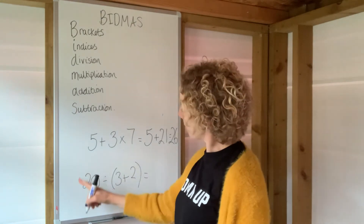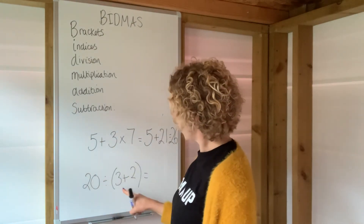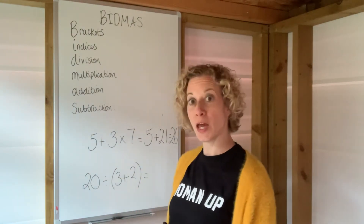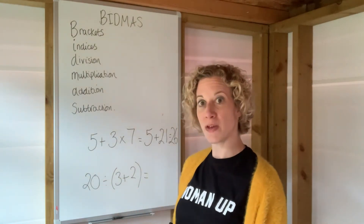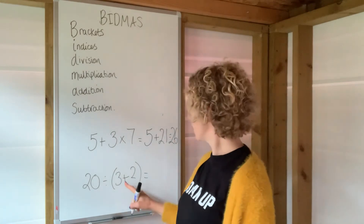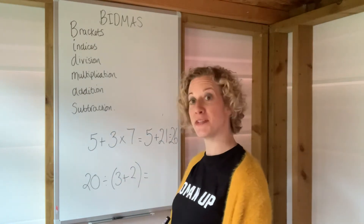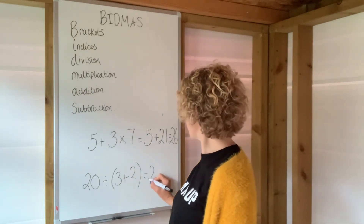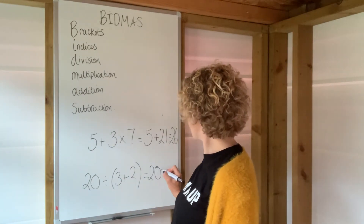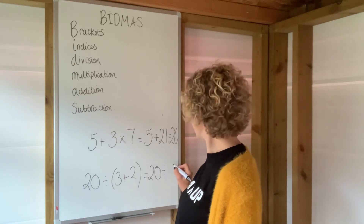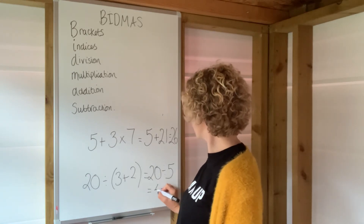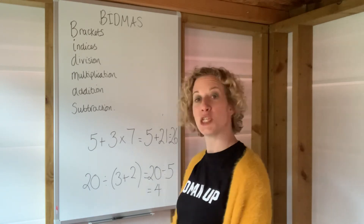And in this sum here, we do the brackets first — we work out what's in the brackets first of all. So 3 plus 2 gives us 5, and the sum then becomes 20 divided by 5, which is 4.